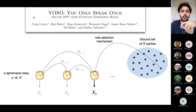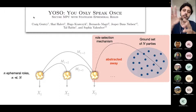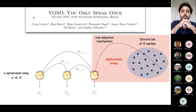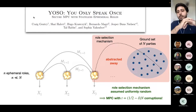Then you want to compute something from this whole behavior. Usually we abstract away this whole party with the role selection mechanism. There's a very large ground set of parties that's much larger than the number of roles. In this original work, they consider this very simple scenario where the role selection mechanism is assumed to be perfect — basically selecting the party uniformly at random.